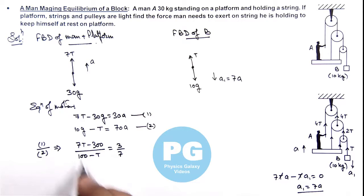This will give us 49T minus 2100 is equal to 300 minus 3T. So on further simplifying, this will result 49 plus 3, this is 52T.